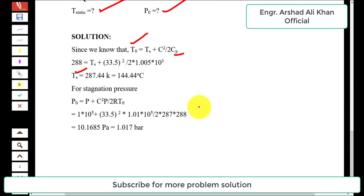For stagnation pressure, we have the expression: P_0 = P + C²P/(2RT_0). In this expression, P_0 is the stagnation pressure, P is the static pressure, C is the flowing velocity, R is the particular gas constant for air, and T_0 is the stagnation temperature. Putting the values in this expression: